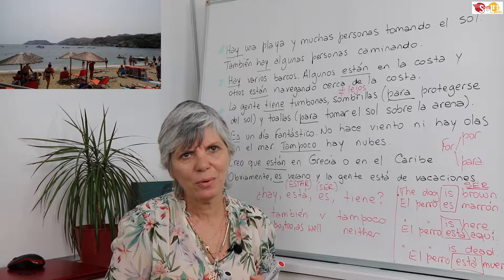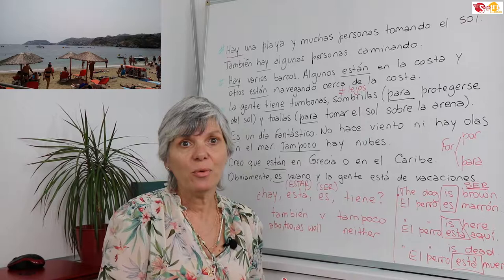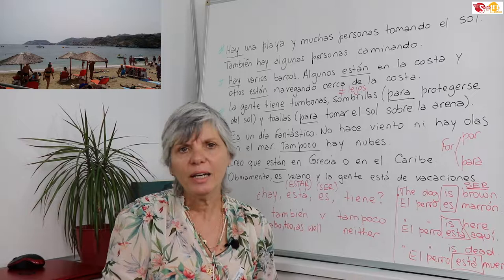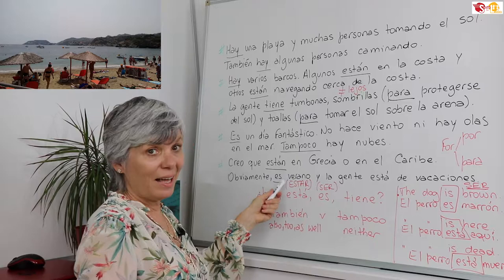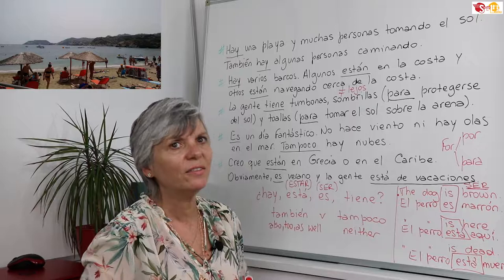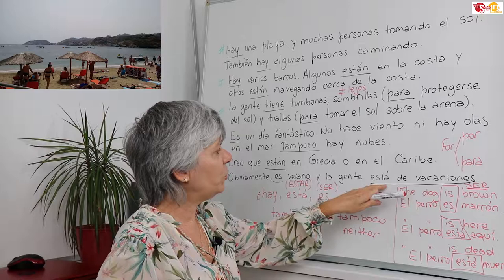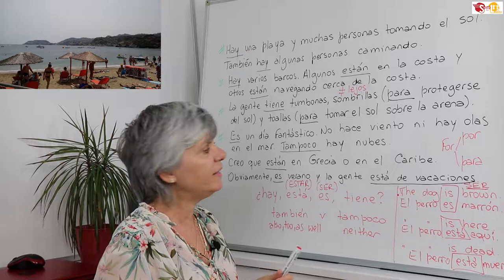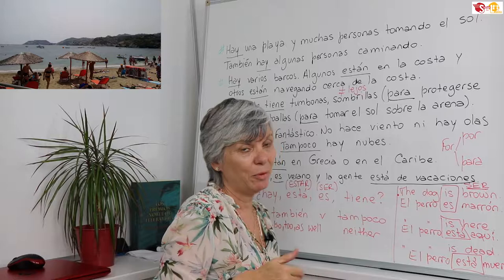Es enero — it's January; es abril — it's April; es verano — it's summer; es invierno — it's winter. We use the verb ser for days, months, and seasons. And then, la gente está de vacaciones — this is a fixed construction. When you say 'I am on holidays,' it's always estar de vacaciones. In some contexts you always use the verb estar — for example, estar de vacaciones, to be on holidays, because it's a particular state.